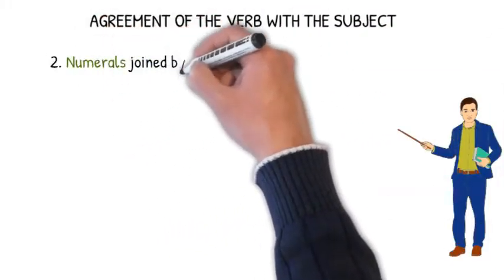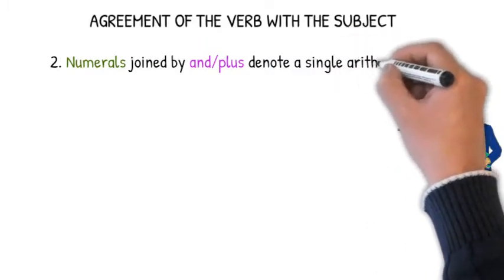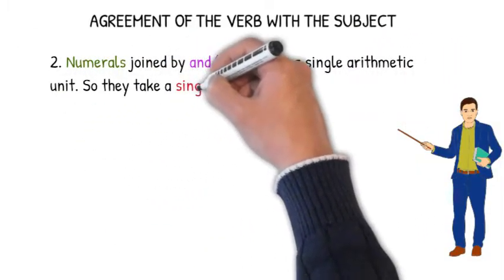Numerals joined by and or plus denote a single arithmetic unit, so they take a singular verb.